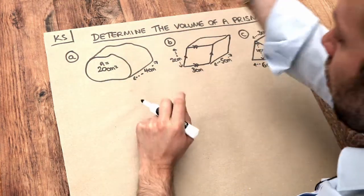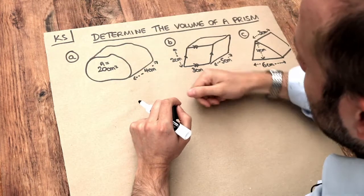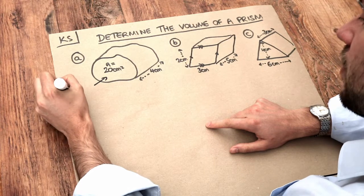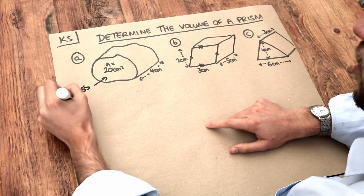So I would see this front shape here wherever I chop that 3D solid. And that shape there is known as the cross section of the prism.